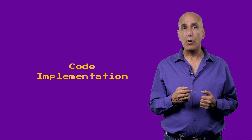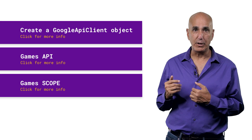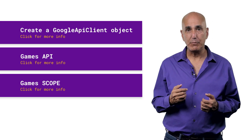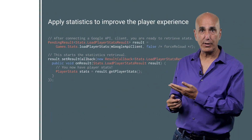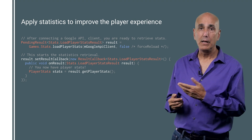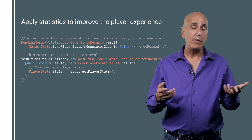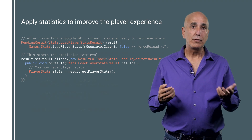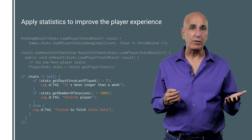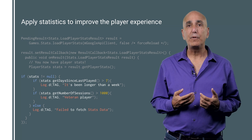So how do you incorporate the PlayerStats API into your game? First you create a Google API client object and configure it to use the game's API and scope. Then you use code like this to retrieve statistics on a player. You can pick and choose which stats are relevant to you, and then you can make a tailored response using those. You can add your own code to customize the gamer's experience for your specific needs and make them feel valued.